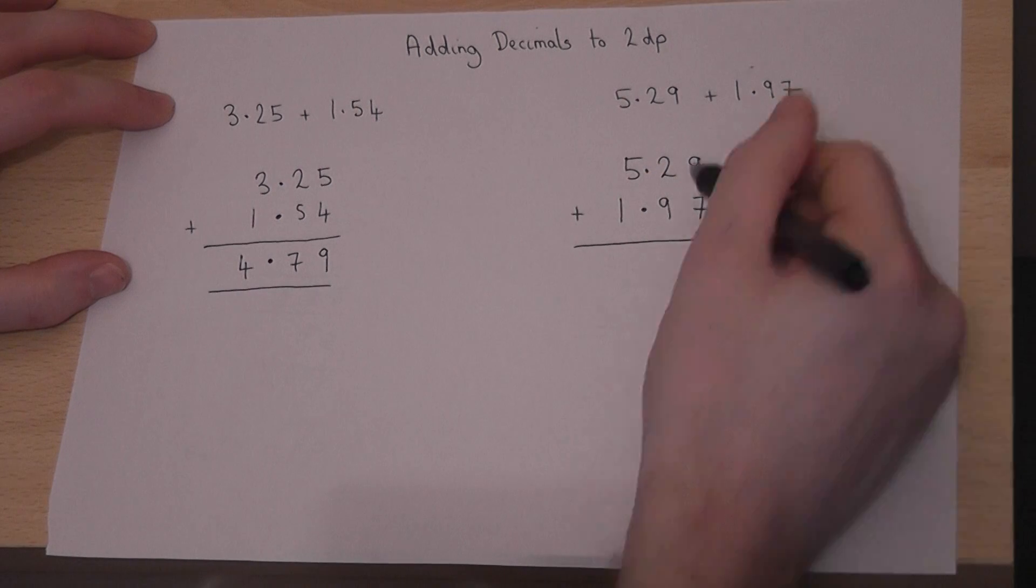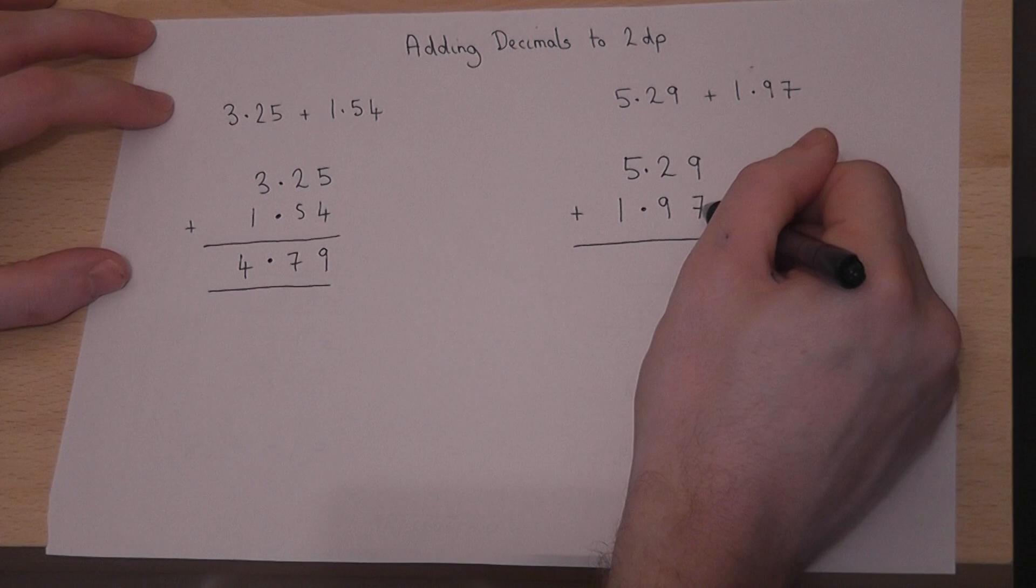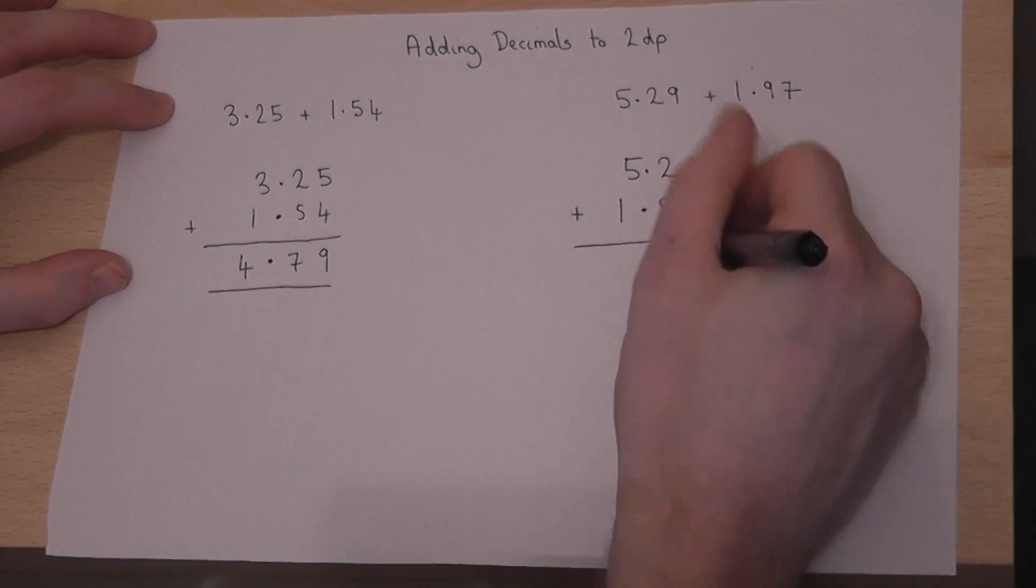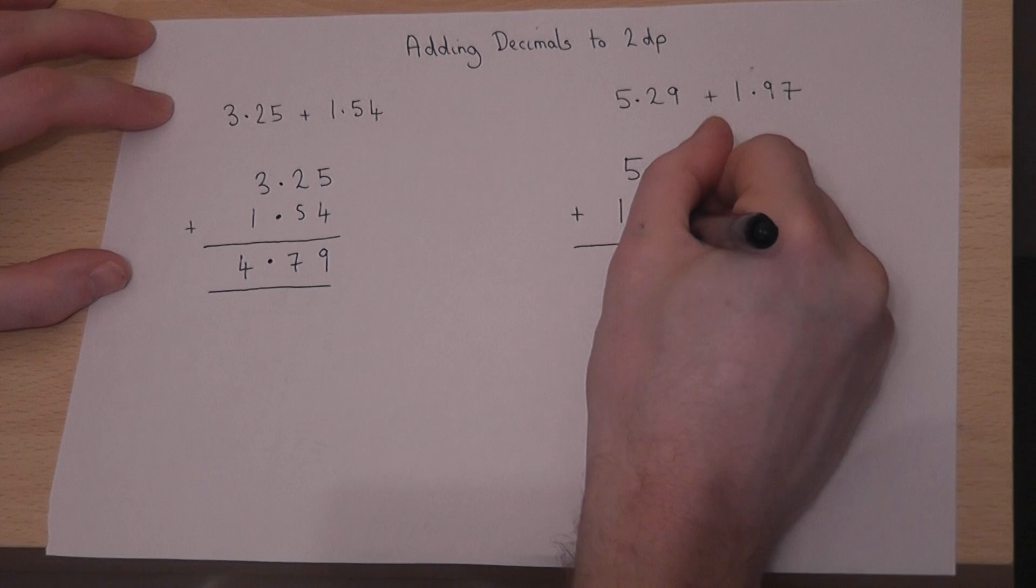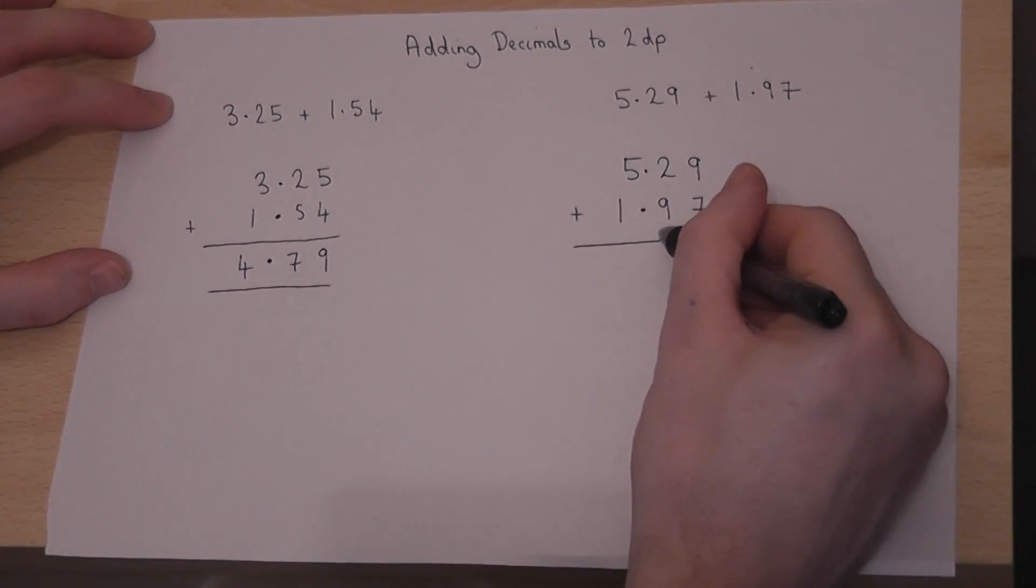So we add up from the right. But when we do 9 plus 7, the answer is 16. There's a 10 there. So 16, we put the unit down below and carry the 10 across to the left column. So 9 plus 7 is 16.